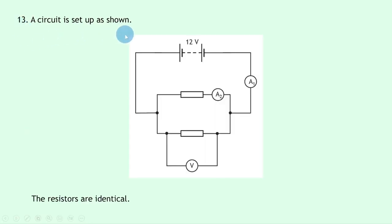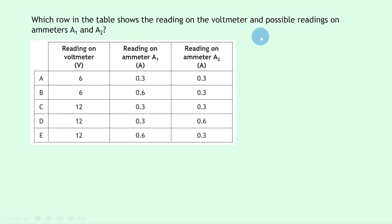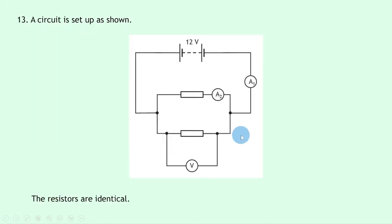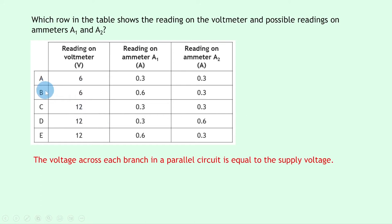Question 13 shows a circuit with a 12 V battery, two identical resistors in parallel, ammeter A1 in series with the battery, ammeter A2 next to one resistor, and a voltmeter across the second resistor. In a parallel circuit, the voltage across each branch equals the supply voltage, so the voltmeter reads 12 V. This rules out options A and B which show 6 V.